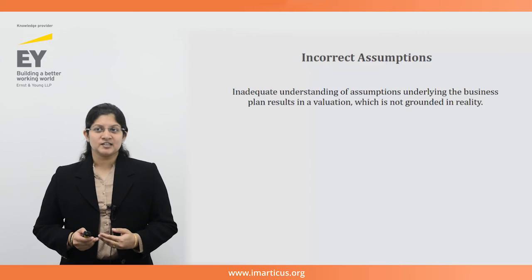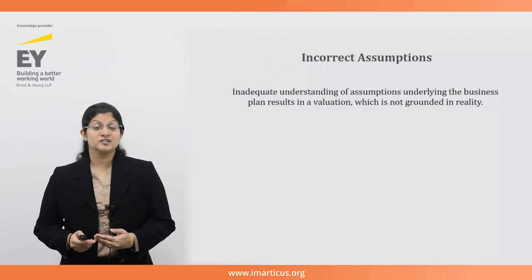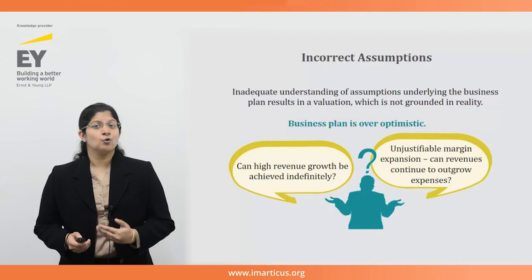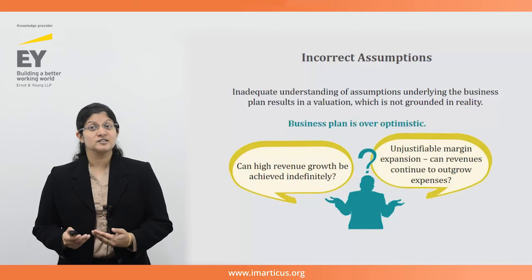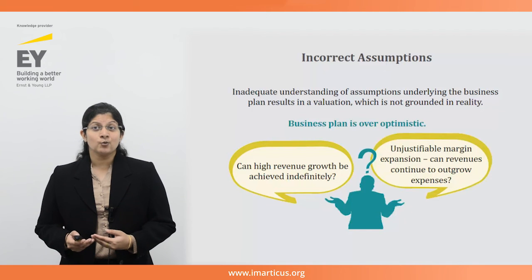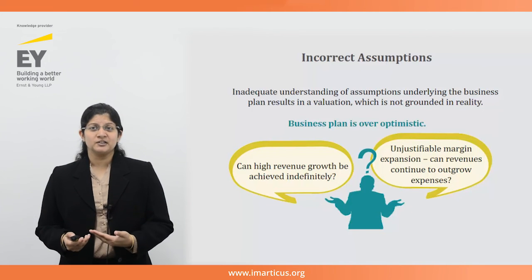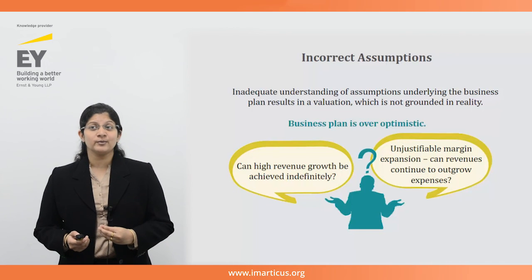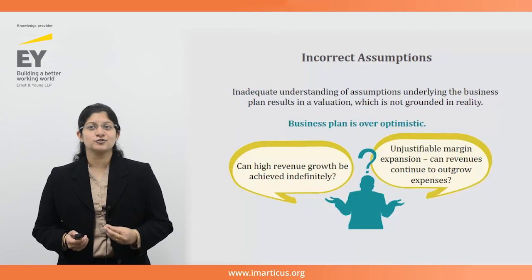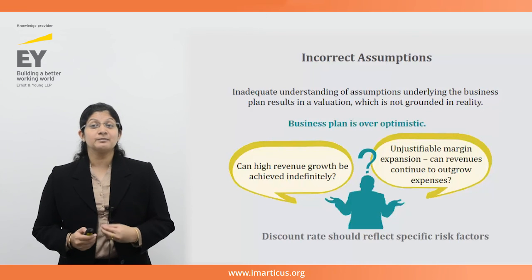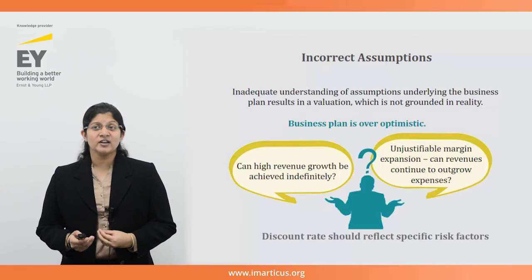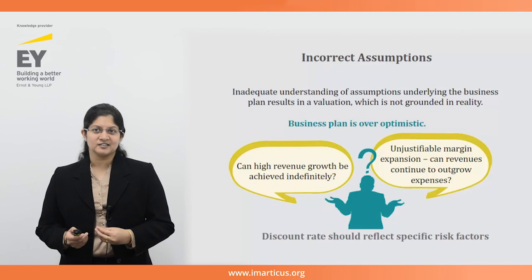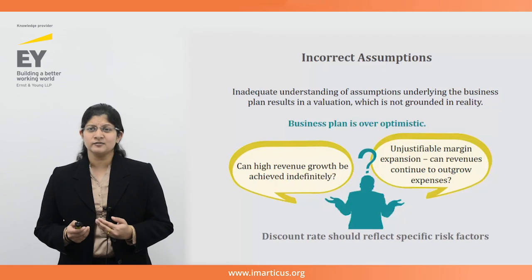Inadequate understanding of assumptions underlying the business plan results in a valuation which is not grounded in reality. Sometimes the business plan is over-optimistic from the seller or business owner's side — one should check whether the projected high revenue growth can be achieved indefinitely and question unjustifiable margin expansion by checking whether revenues can continue to outgrow expenses. When building the discount rate, one should ensure it reflects all risk factors involved, like currency risk and solvency risk.